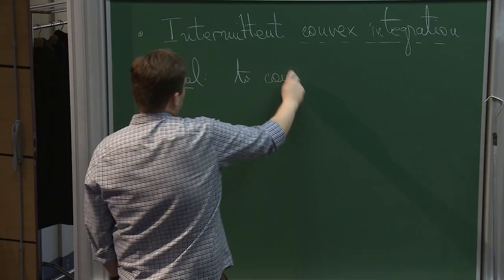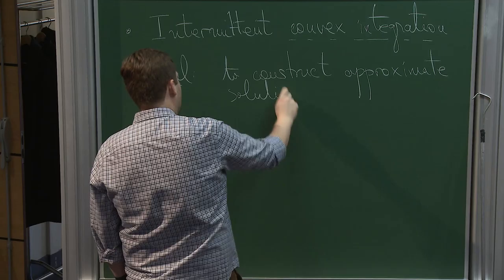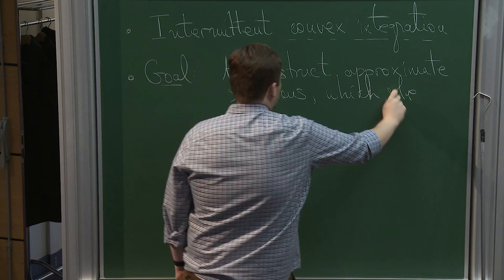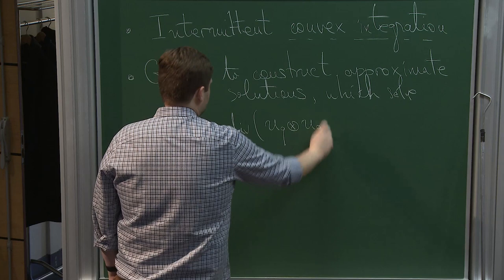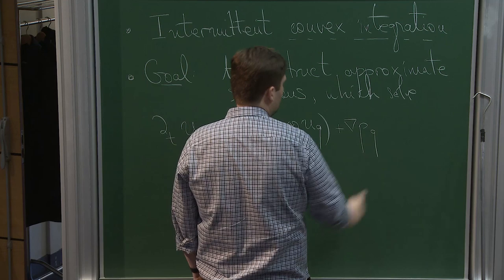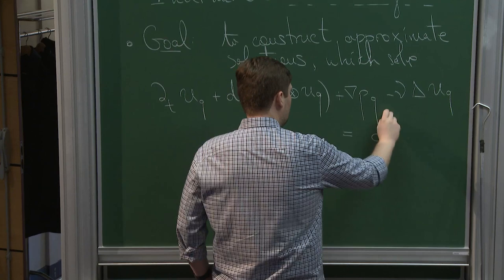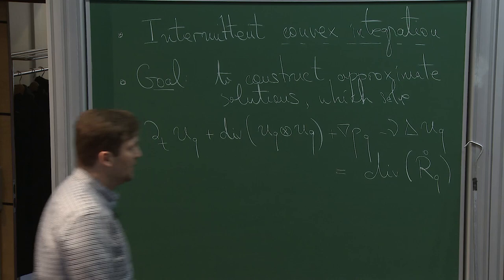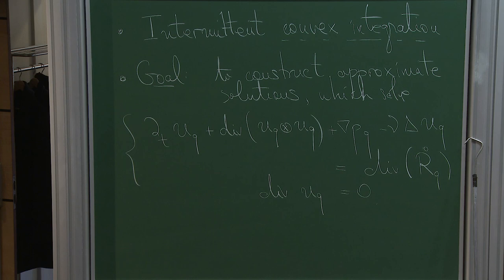To build this I need to recall the framework of convex integration. We construct approximate solutions which solve the Navier-Stokes-Reynolds equation: ∂_t u_q plus gradient of a pressure minus μ Δ u_q equals the divergence of a traceless symmetric matrix R_q, with divergence of u_q equal to zero. Our goal, just like in Euler, is to construct a sequence (u_q, R_q) to this equation such that R_q goes to zero and the increments also go to zero. The first condition means the error term dies as q goes to infinity.